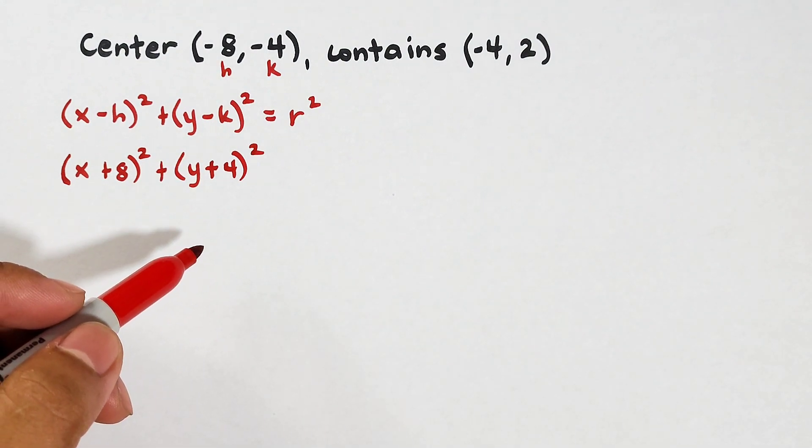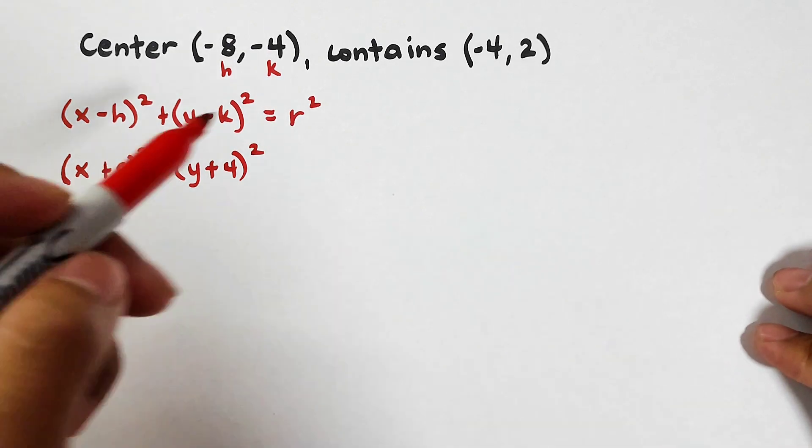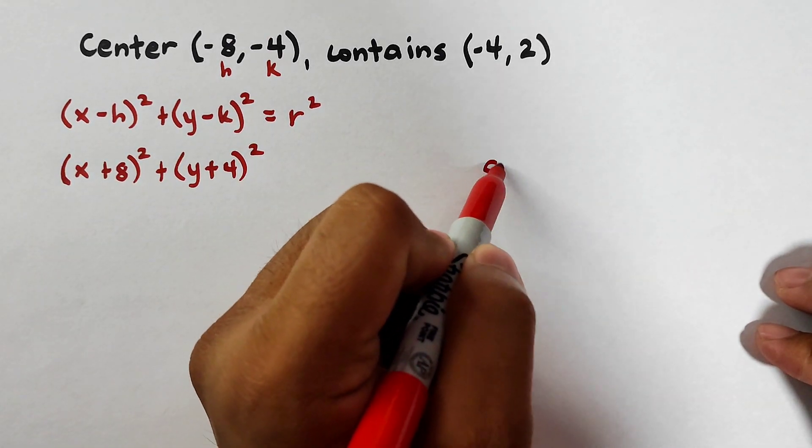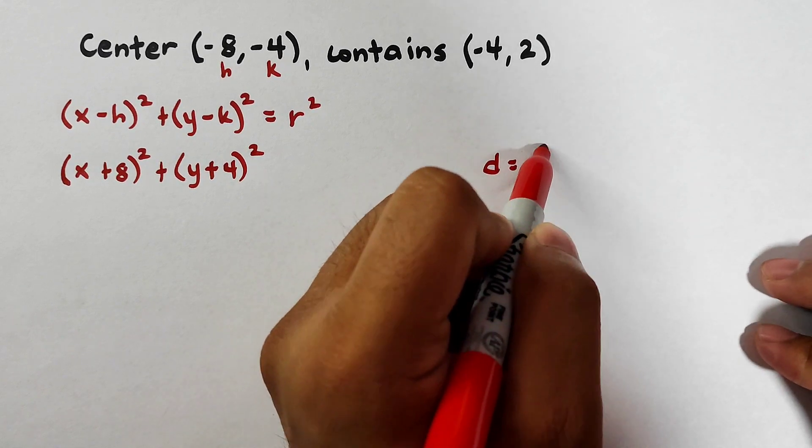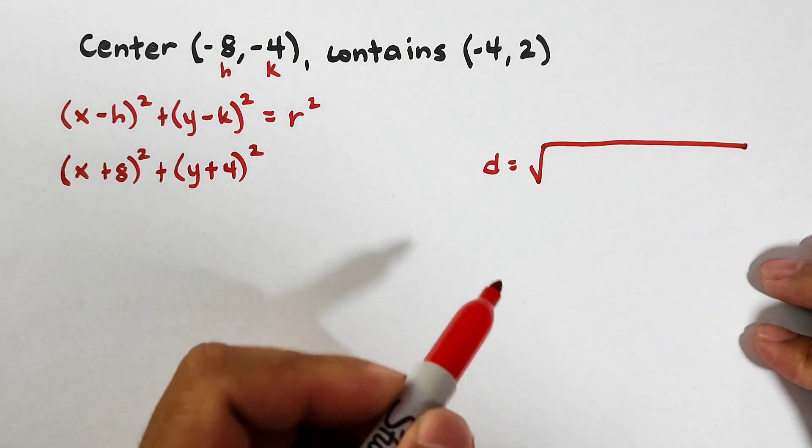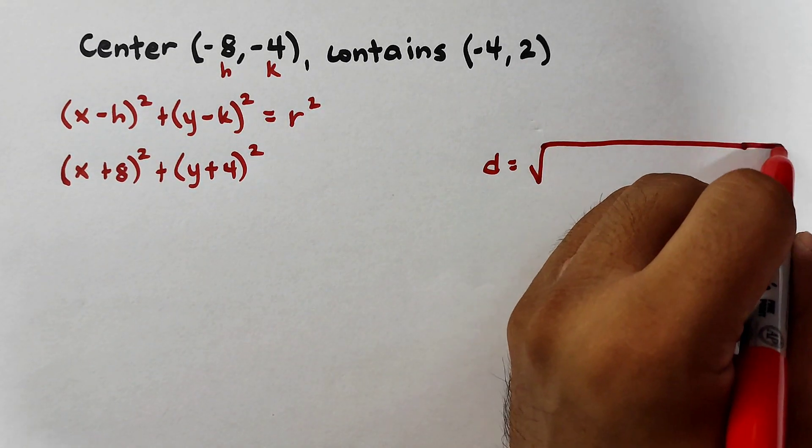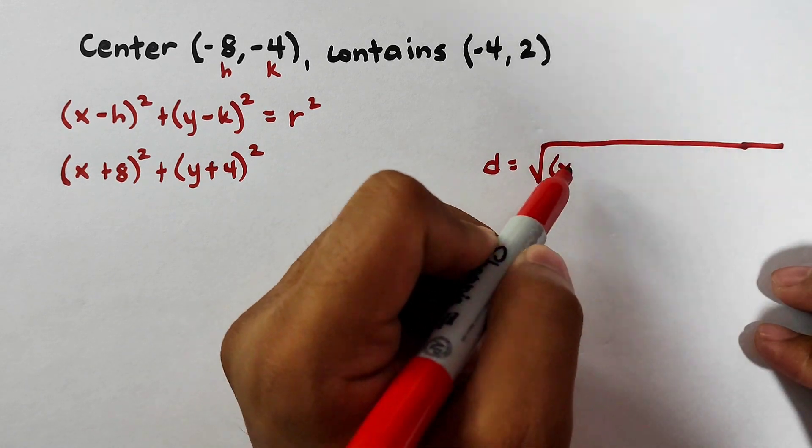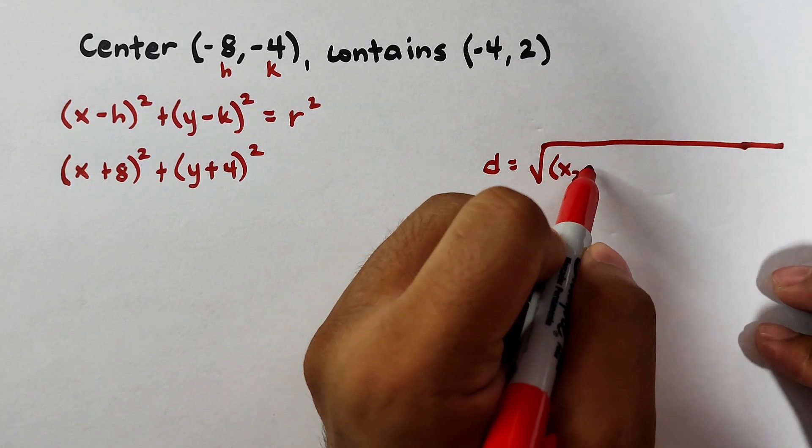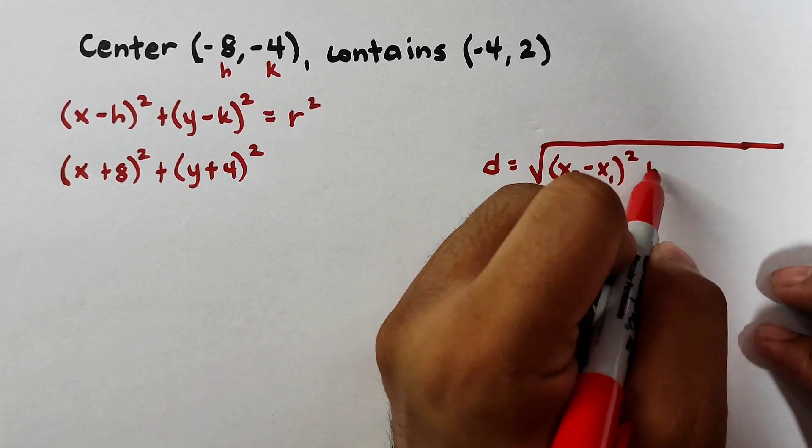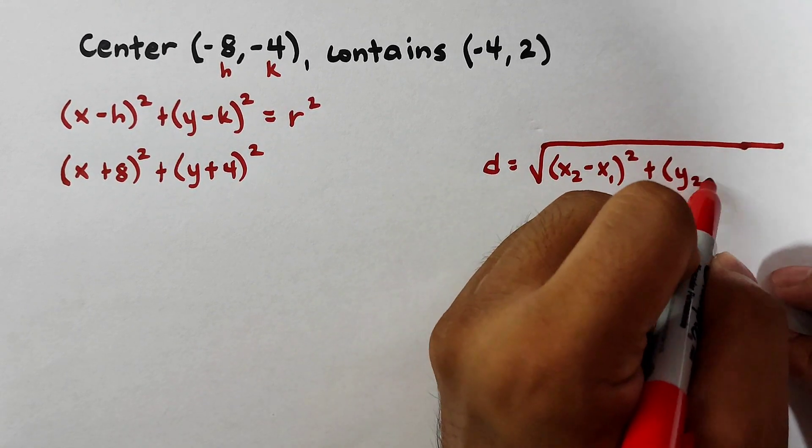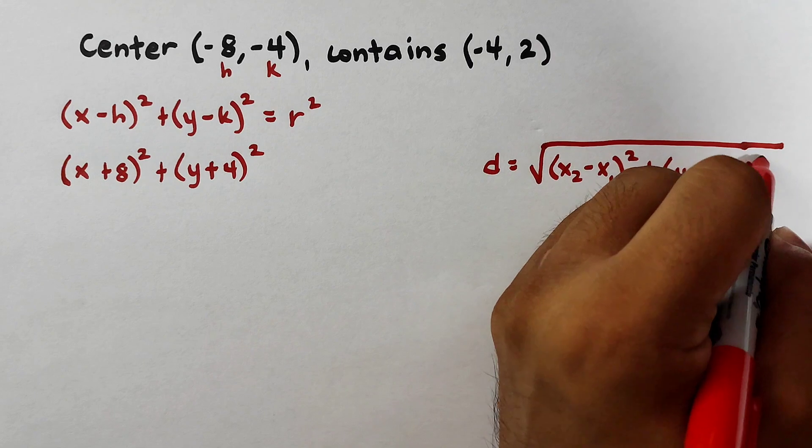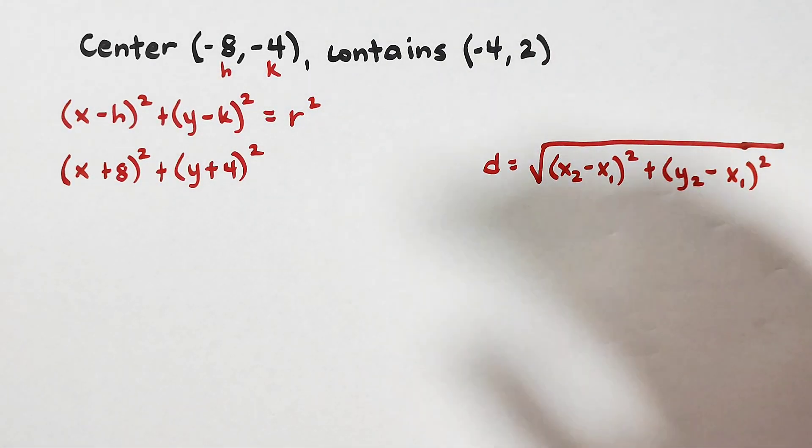So how are we going to find r? Here's what we'll do. We will use the distance formula. The distance formula is this one. D is equal to the square root of x sub 2 minus x sub 1 squared plus y sub 2 minus x sub 1 squared. Now, why do we need to use the distance formula?